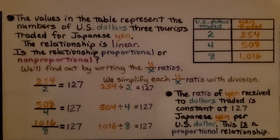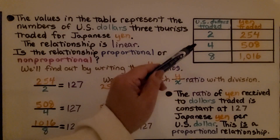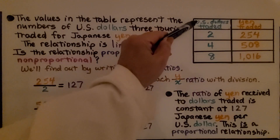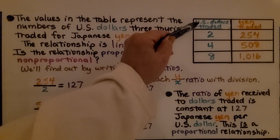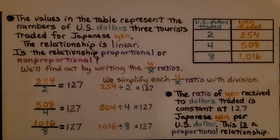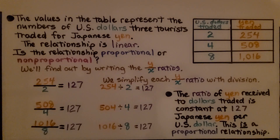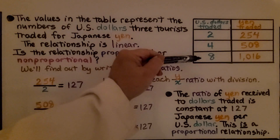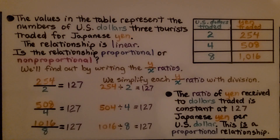Here you can see they're giving us a table. We have U.S. dollars traded and yen traded. The values in the table represent the number of U.S. dollars three tourists traded for Japanese yen. So we have one tourist, two tourists, three tourists.